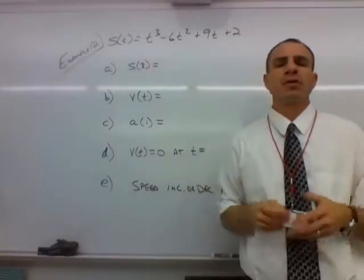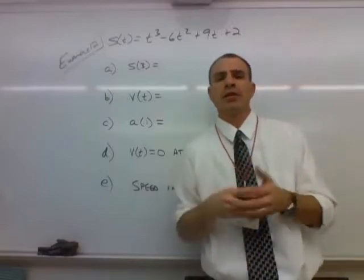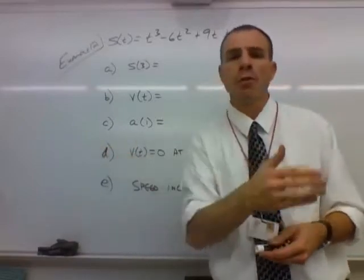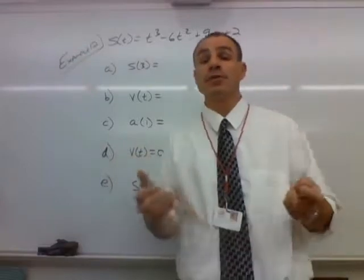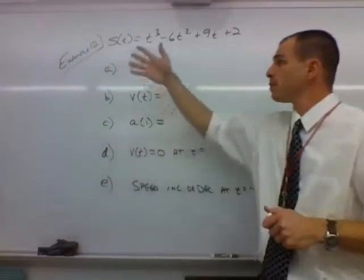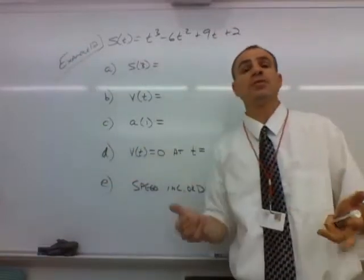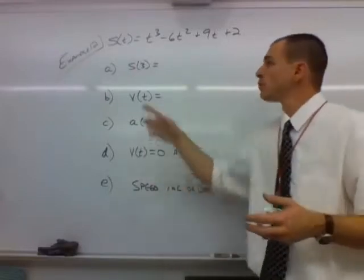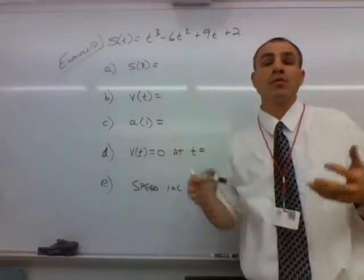That's the position of our particle, and it's valid for all t greater than or equal to 0 because time is moving forward from whenever our beginning time is, which is when t is 0. So we have different parts here. Part A is asking, what's the position of the object when t is equal to 3? In other words, what's s of 3?